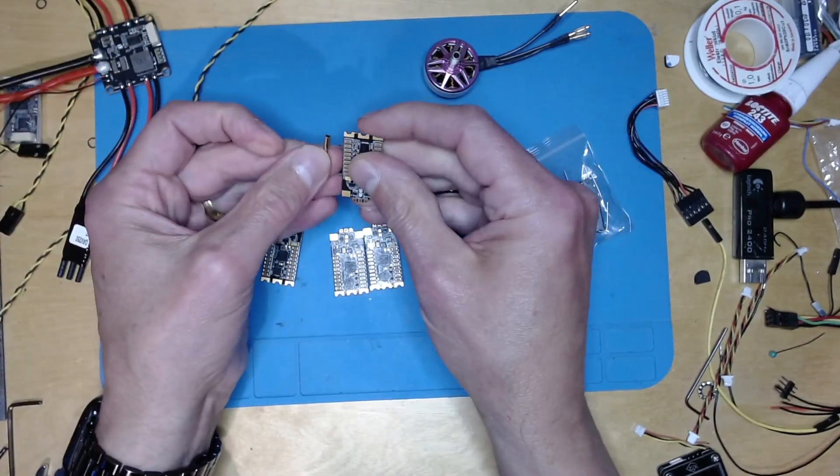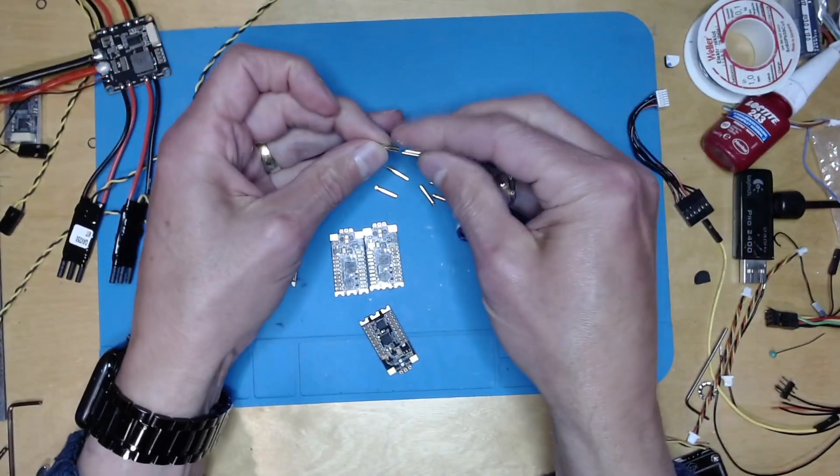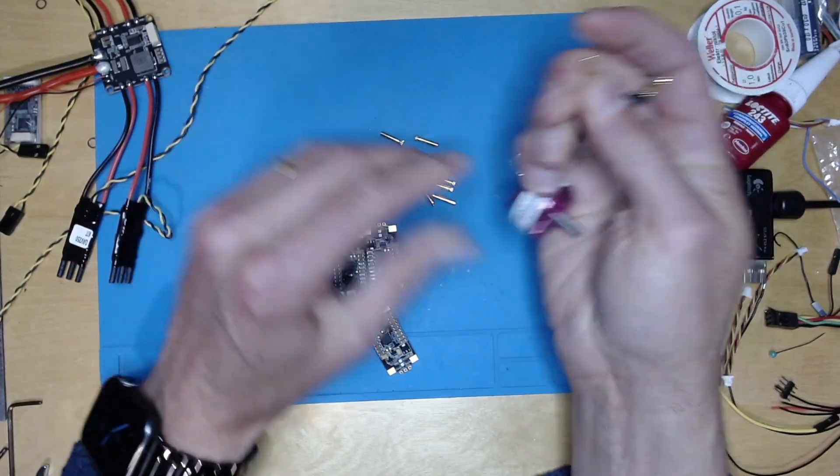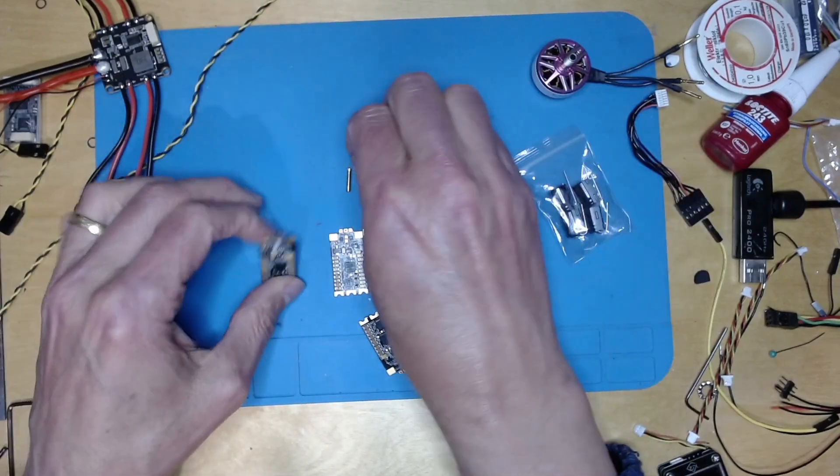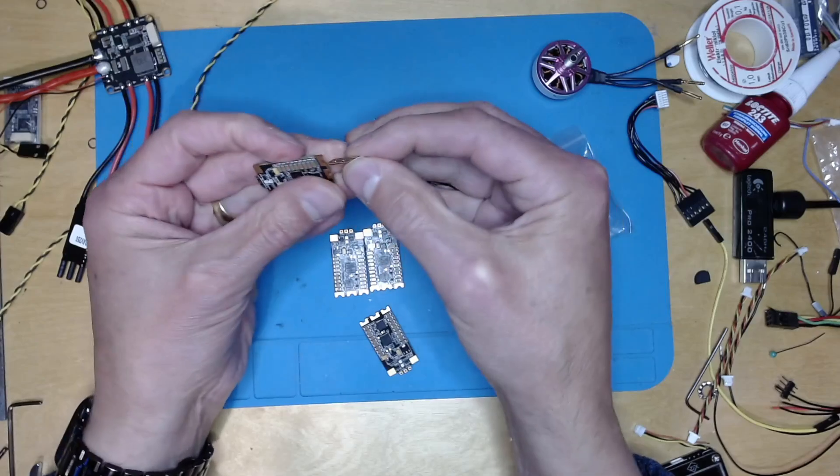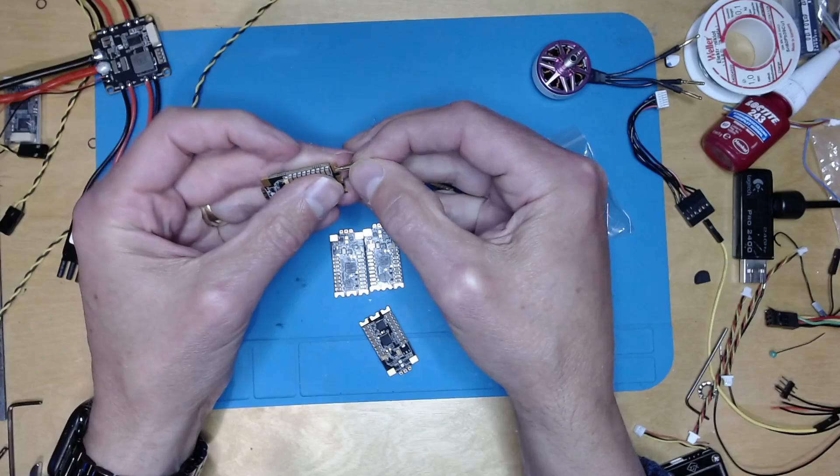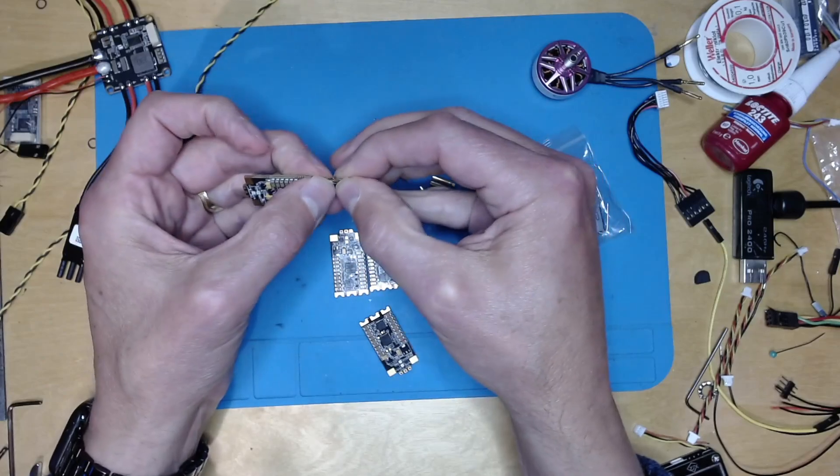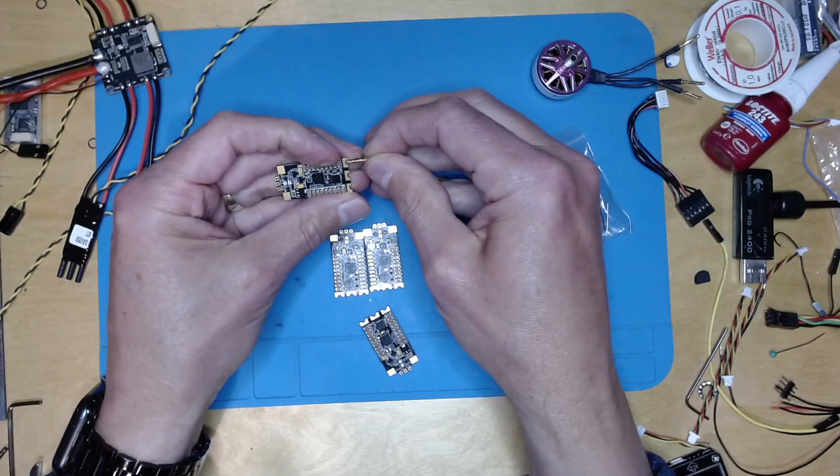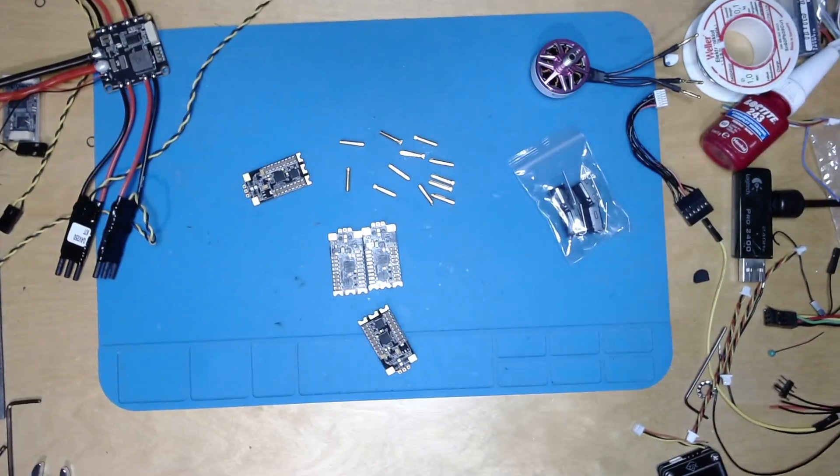I'm going to solder some female bullet connectors here that I've got, and they fit the motor okay - that's the right size bullet connector. I seem to have a few of those, so I'm going to solder those into here and then solder the wires on the other end. Then I will be ready to flash with AM32.